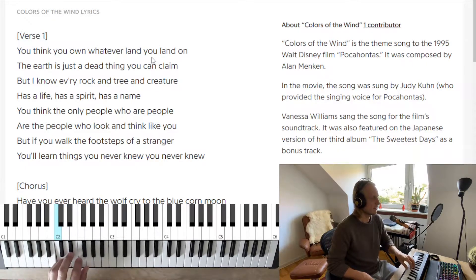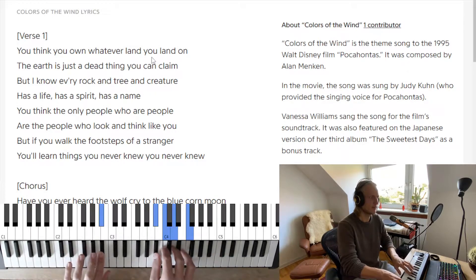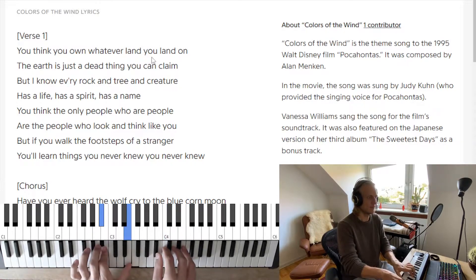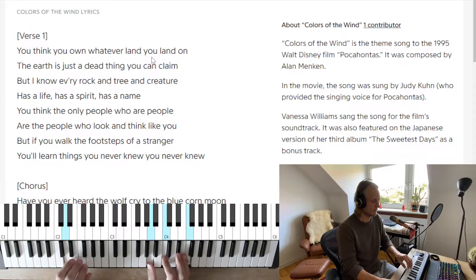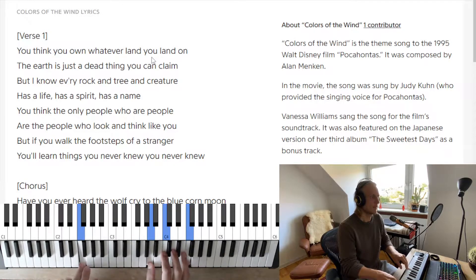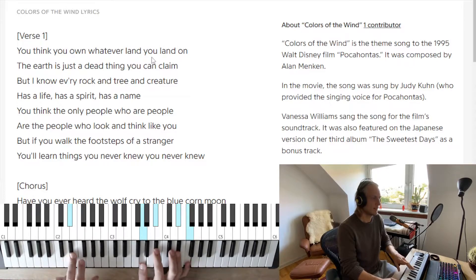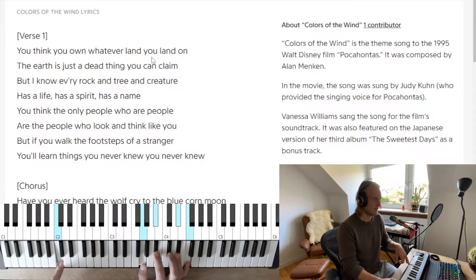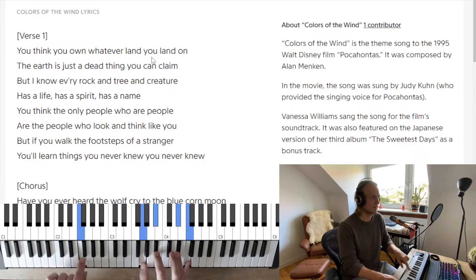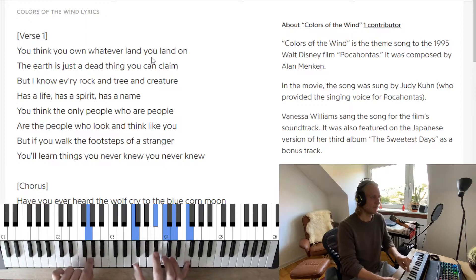Has a life, has a spirit, has a name — and we turn around on F. The chords are: B flat, B flat again, to F over D, B flat over G, F over F, E flat, B flat over D. Then E flat over C — 'has a spirit' — E flat over F — 'has a name' — B flat over G.